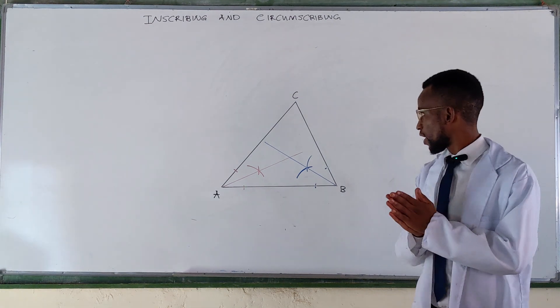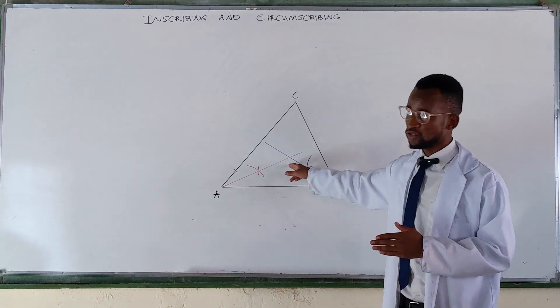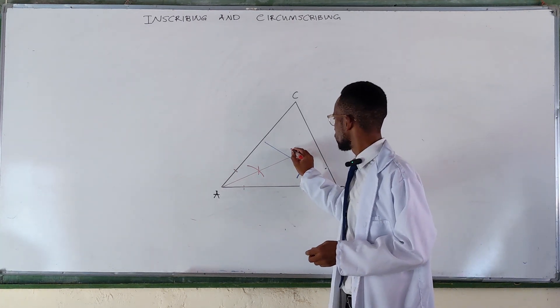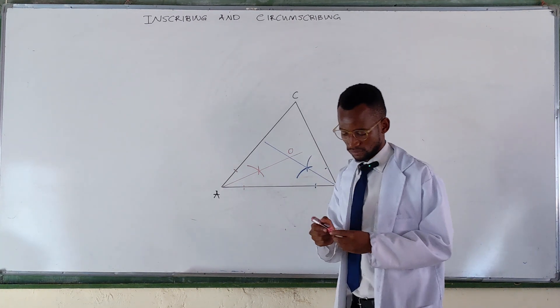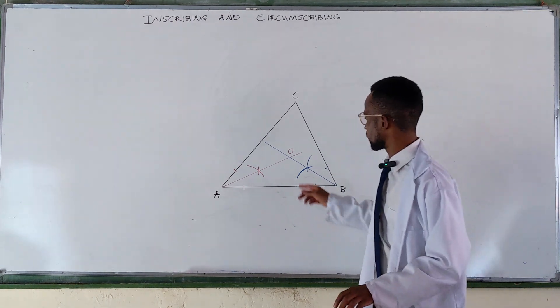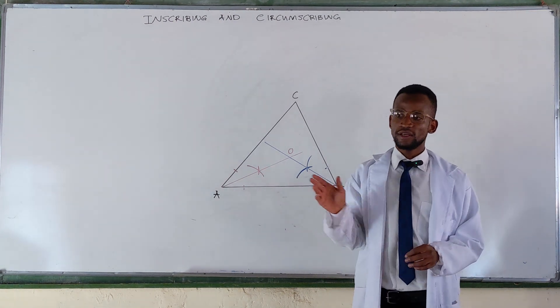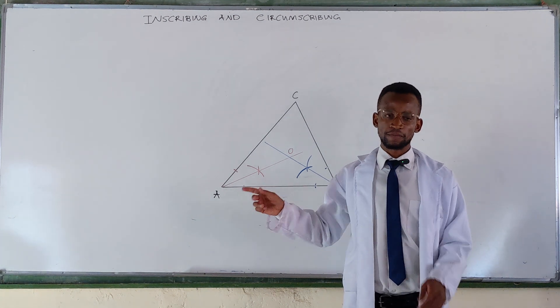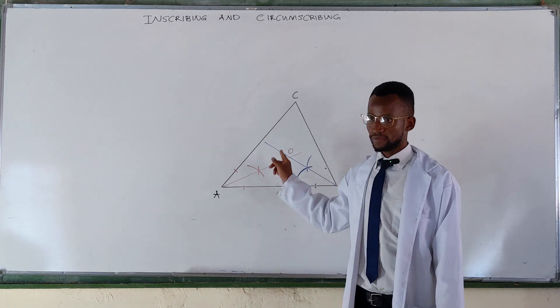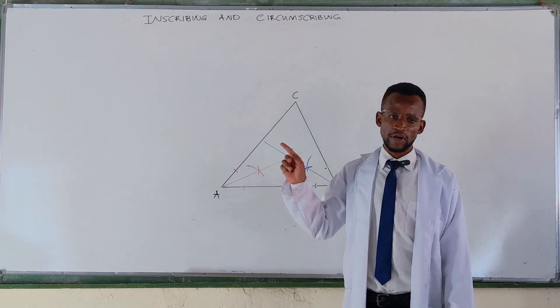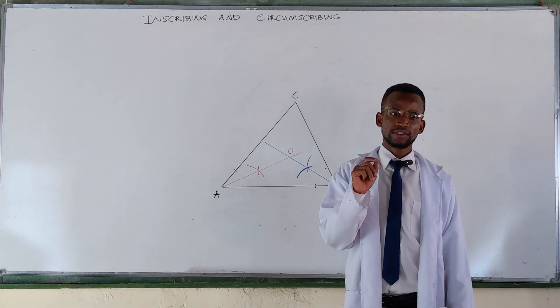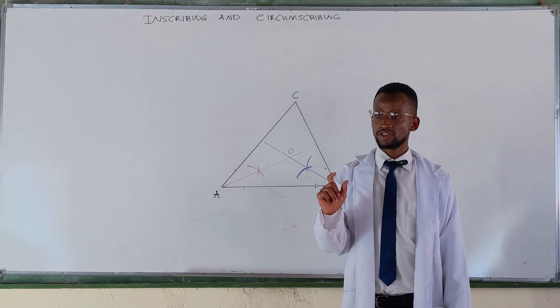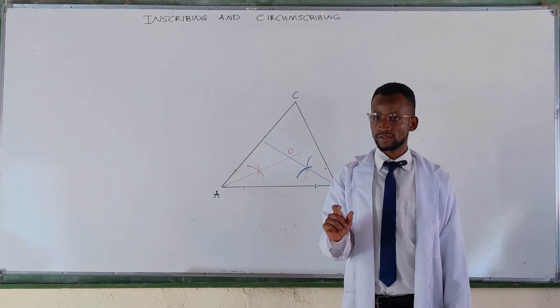And then after doing this, it means you found the center, so we can have our center over there. That is where we place our compass and then open to the required radius and draw. Now for this one, for an inscribed circle, you need the radius, the actual radius of the circle. Are we together?